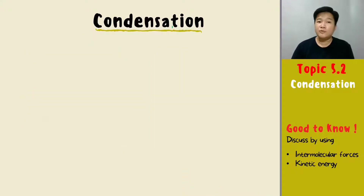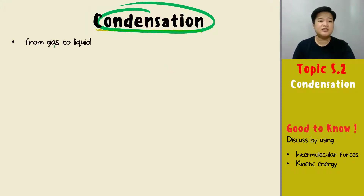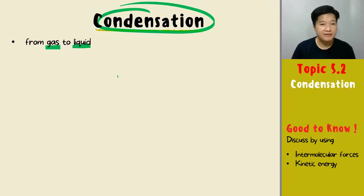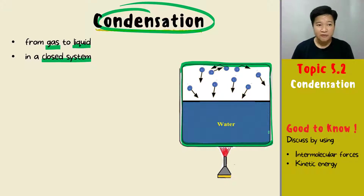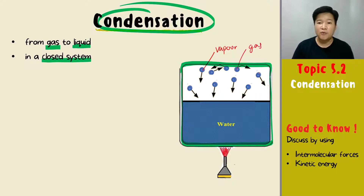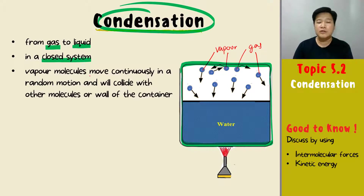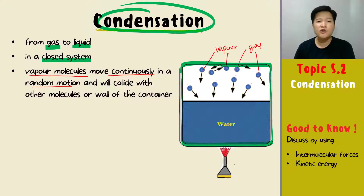Next, let's look at condensation — condensation is your gas changing to liquid. For condensation to happen, you must always have a closed system. Make sure your system is a closed container. This is all the vapor produced during vaporization, and the gas and vapor molecules will move continuously in random motion, as we know gas behaves — non-stop random motion.